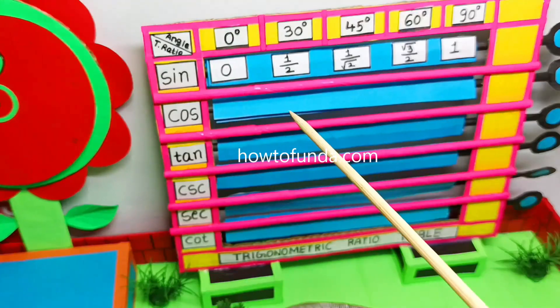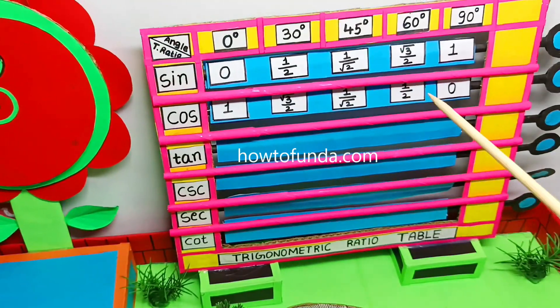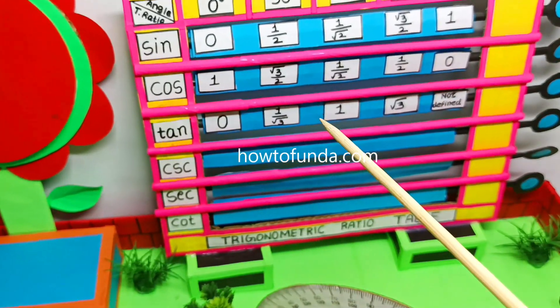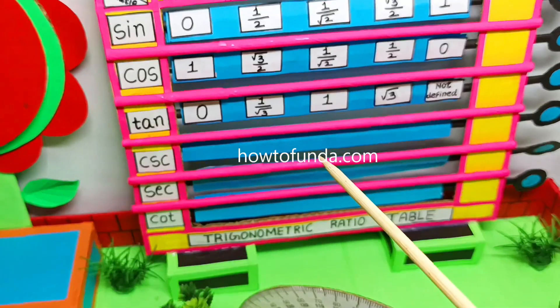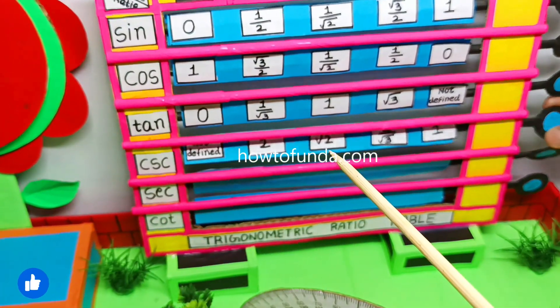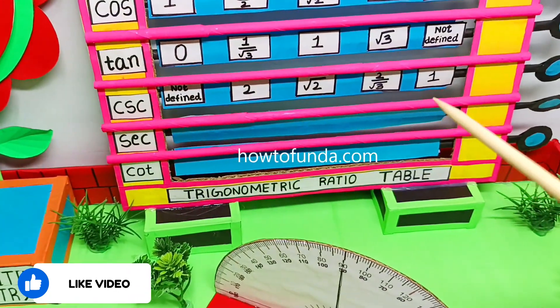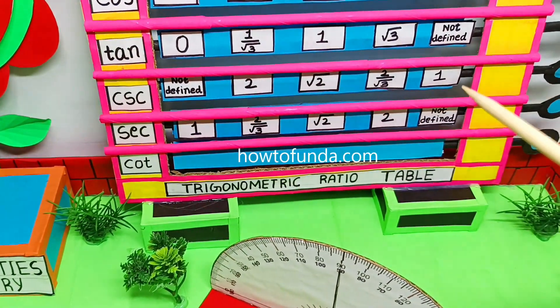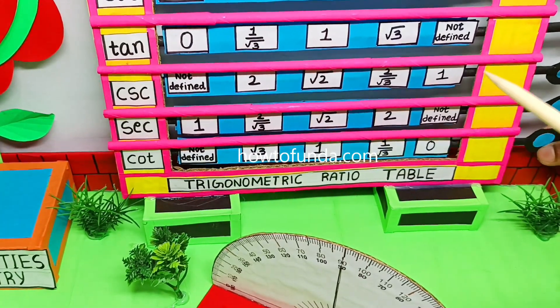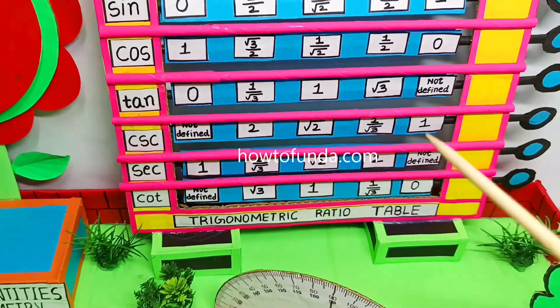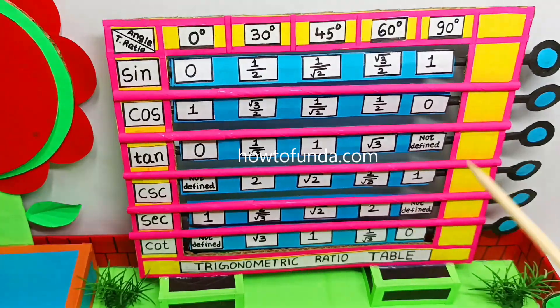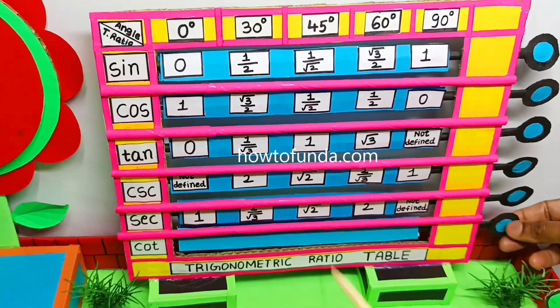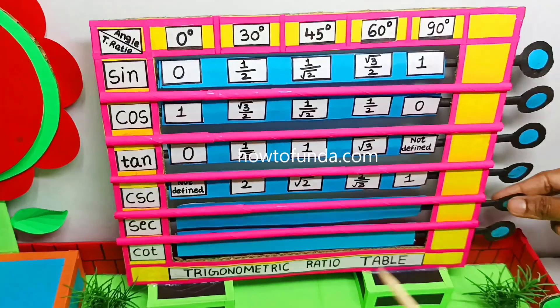For cos θ these are the values, and for tan θ these are the values, and for cosec θ these are the values, and for sec θ these are the values, and for cot θ these are the values. We are depicting it in a very simple way so that people can easily remember by making use of these items in this park.